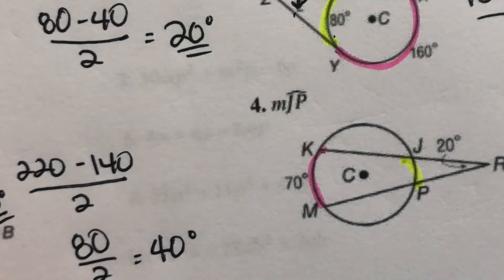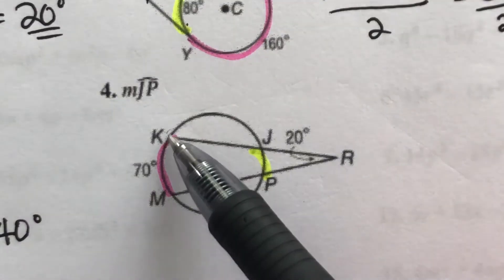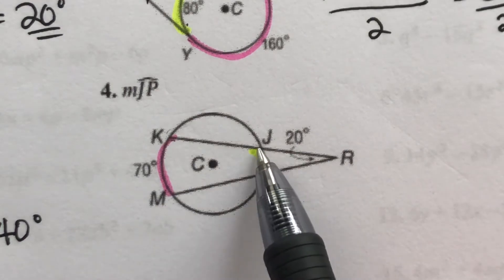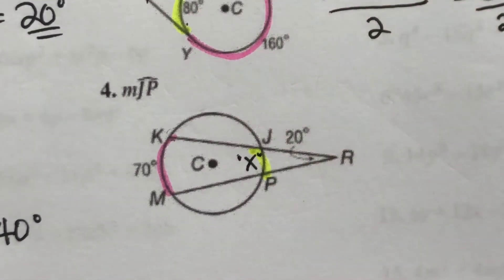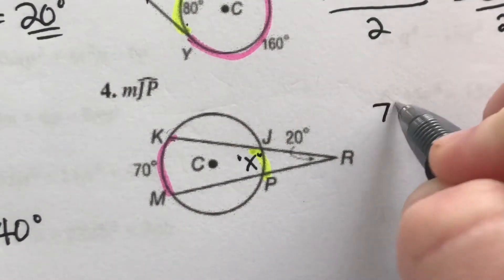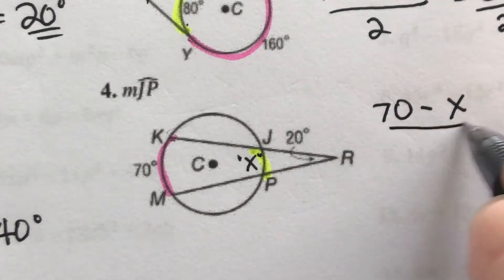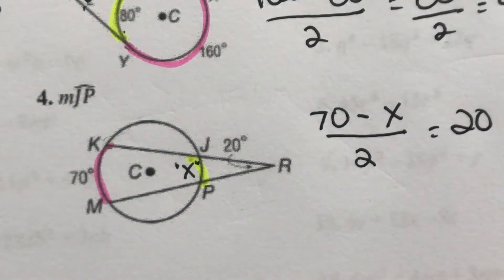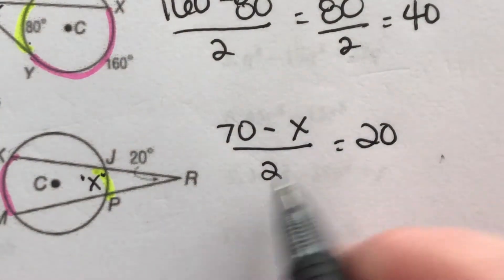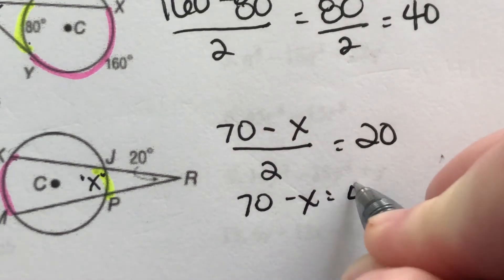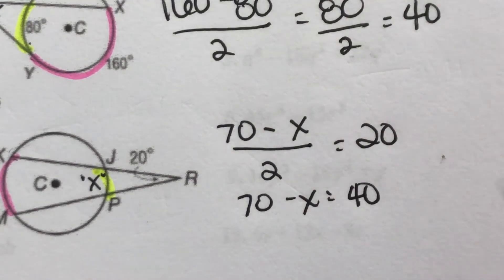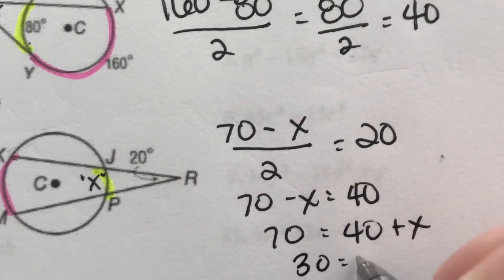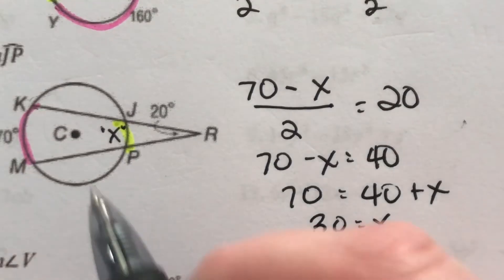Number four: two secant lines. Big minus little divided by two equals our angle. It gives us the big arc but not the little arc, so we'll call that X. It does give us the angle. So: 70 minus X divided by two equals 20 degrees. Multiply both sides by two: 70 minus X equals 40. Add X to both sides, then subtract 40 from both sides. The measure of the smaller arc is 30 degrees.